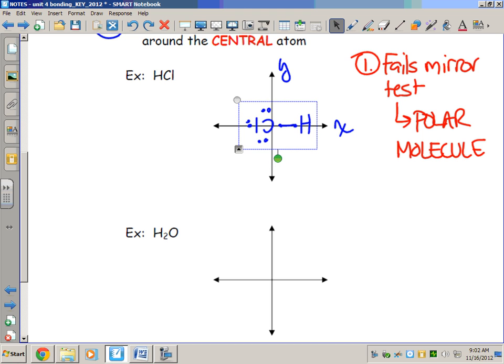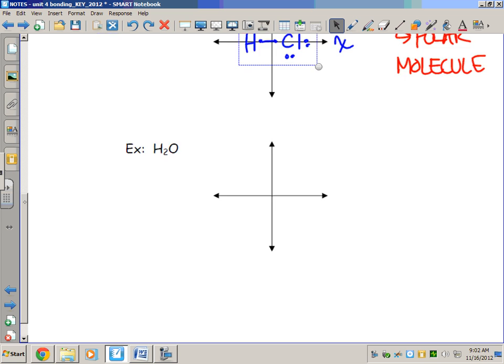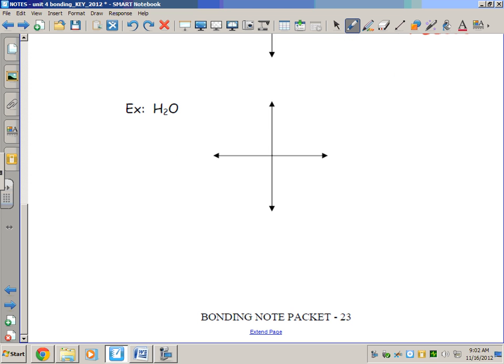Our second example can be drawn a couple different ways. The first way I'm going to draw it would end up confusing a lot of people when it comes to the mirror test. We've got an O, we know that O forms two bonds, it's got an H on both sides, and we draw our lone pairs. Well that to me looks very symmetrical. I can flip this thing, it's the same as it was before. Flip it, I got the same thing on both sides.